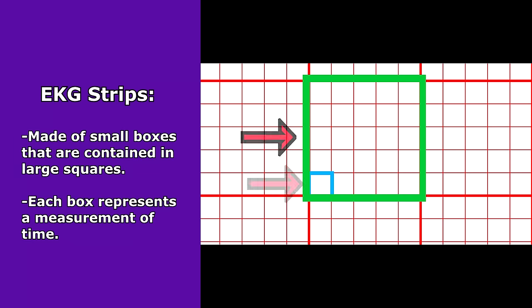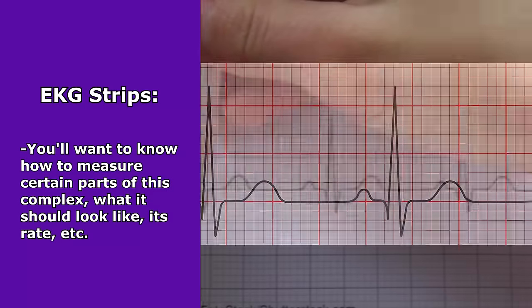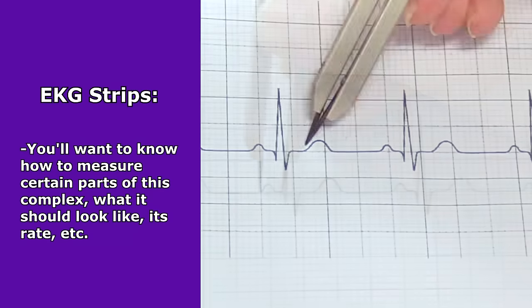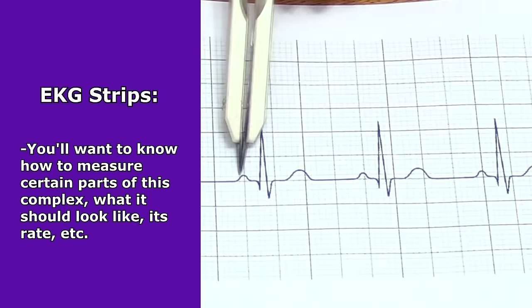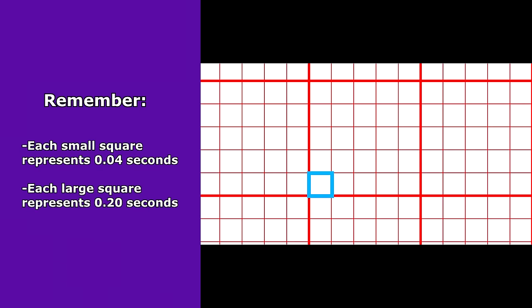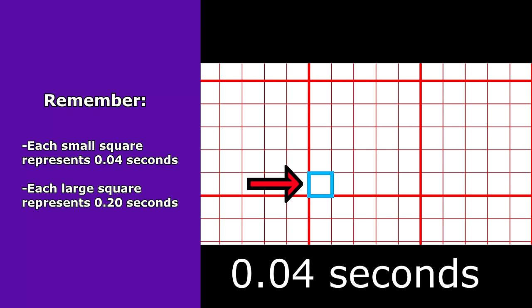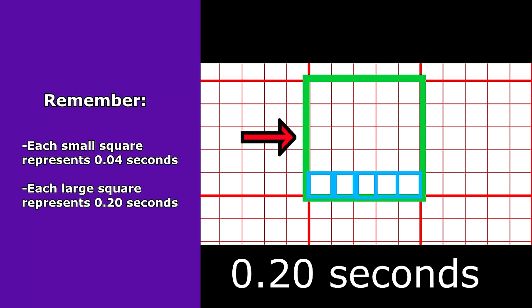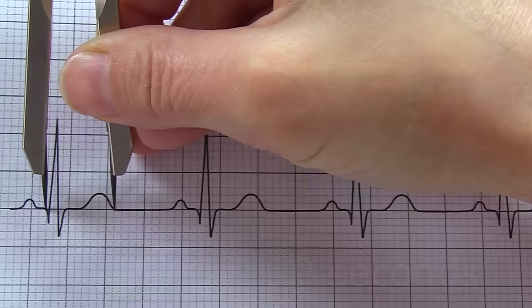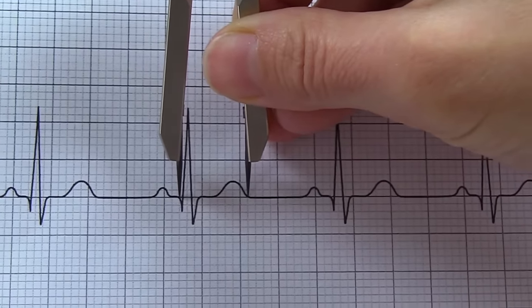When analyzing a patient's rhythm and trying to interpret what kind of rhythm it is, you'll have many PQRST complexes on EKG strip paper. You want to be familiar with the EKG strip paper because it's made up of small boxes contained within large squares, and each box represents a measurement of time. You want to memorize the following: each small square represents 0.04 seconds of time, and each large square contains five small squares, representing 0.20 seconds. You will use these small squares to determine the duration of certain parts of the PQRST complex.